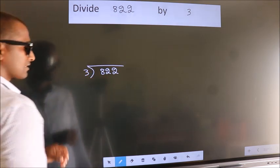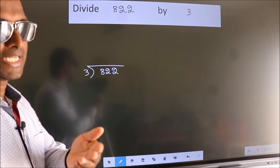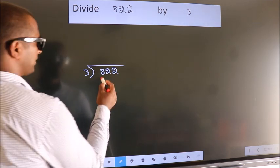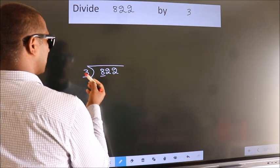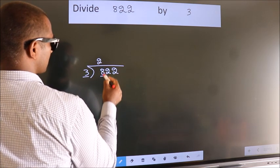This is your step 1. Next, here we have 8, here 3. A number close to 8 in 3 table is 3 2s, 6.